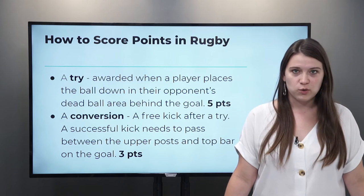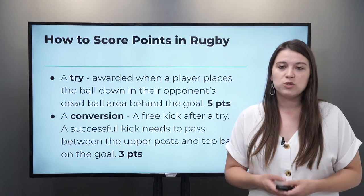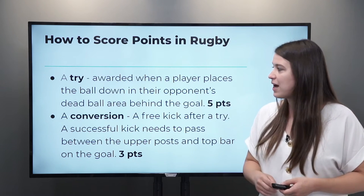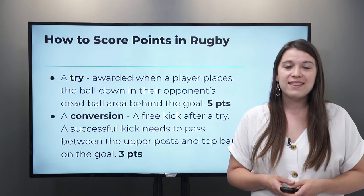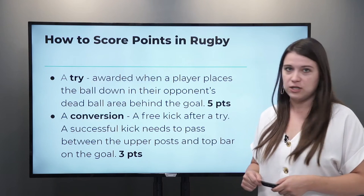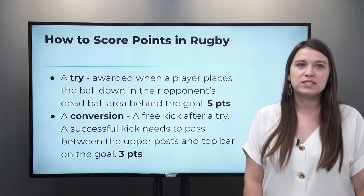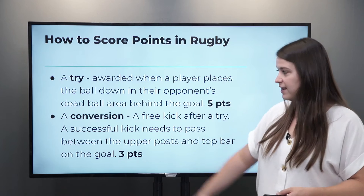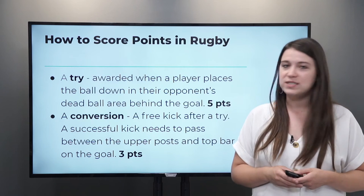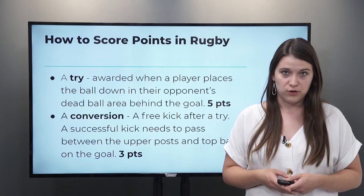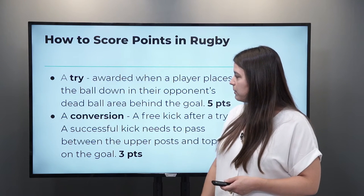So how do you score points? We have a try, which is awarded when a player places the ball down in their opponent's dead ball area behind the goal, and this is worth five points. What else can you do in a rugby match to score points? A conversion is a free kick which comes after a try. A successful kick needs to pass between the upper post and the top bar on the goal, and if you score a conversion, then you receive two points.